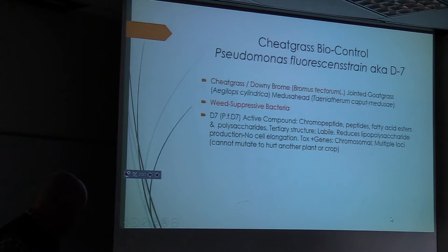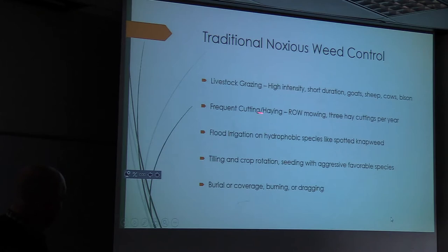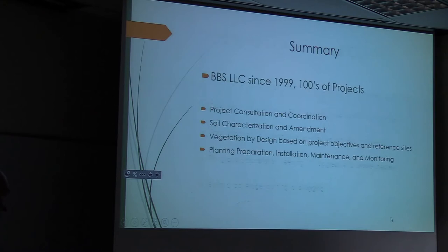Cultural controls include cutting, grazing, flood irrigation, tilling, cropping, and burial — some of them are very effective. This is where we jump in. We've got many hundreds of projects now.